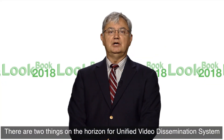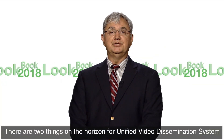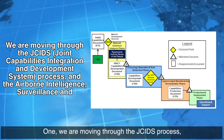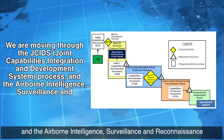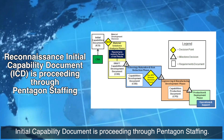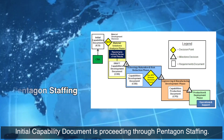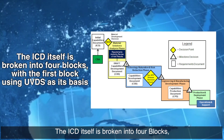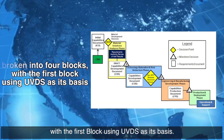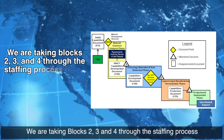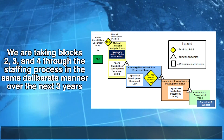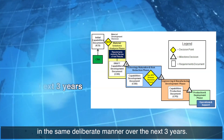There are two things on the horizon for the Unified Video Dissemination System. First, we're moving through the J-SIDS process and the Airborne Intelligence, Surveillance, and Reconnaissance Initial Capability document is proceeding through Pentagon staffing. The ICD itself is broken into four blocks, with the first block using UVDS as its basis. We're also taking blocks two, three, and four through the staffing process in the same deliberate manner over the next three years.